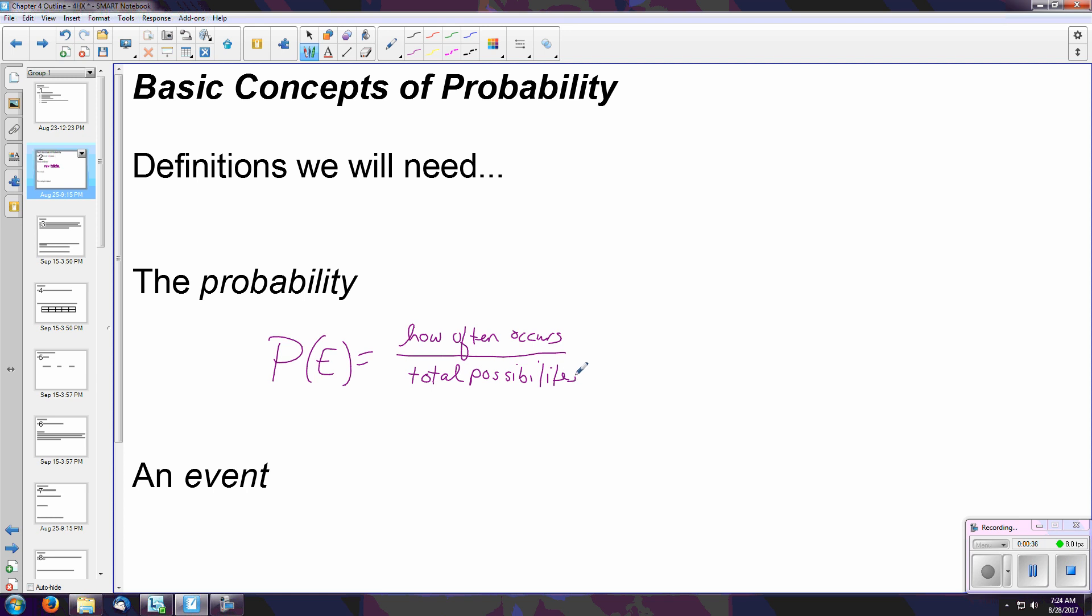So notation here is very similar to what you may have seen in an algebra course before. It looks almost like a function, but we would read this as the probability of an event, in this case we'll call it event E, occurring and that's how we set it up.